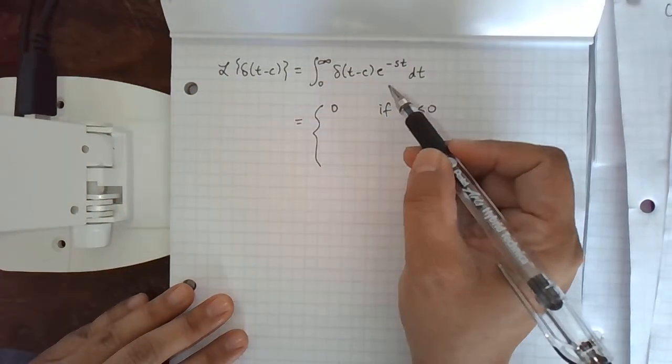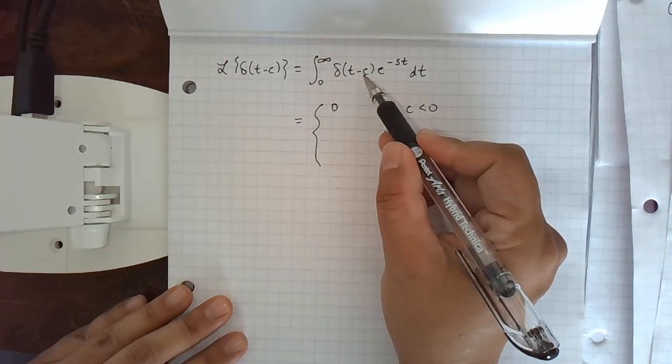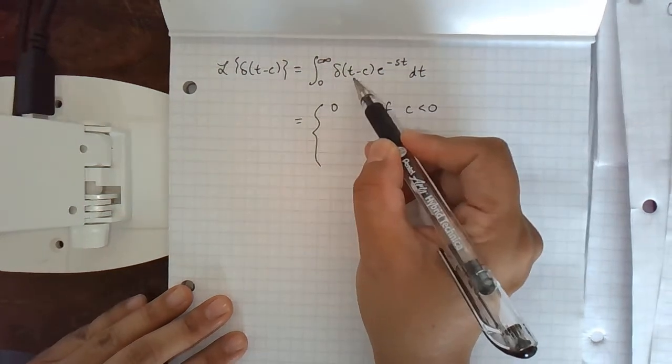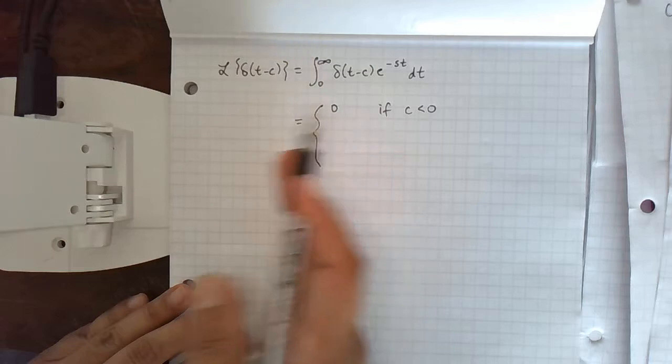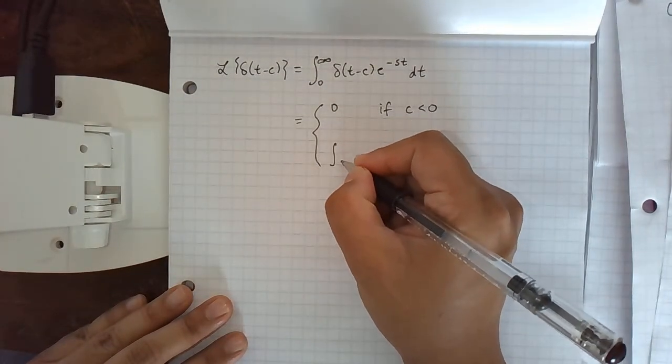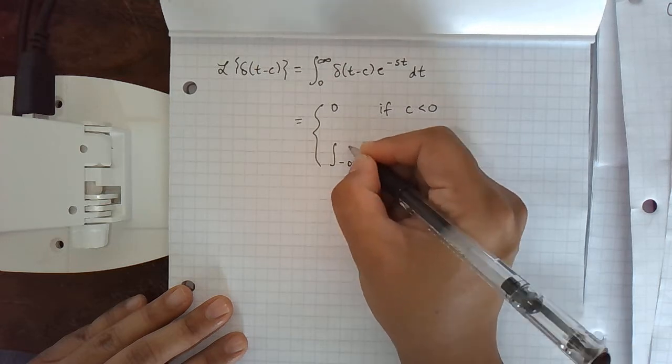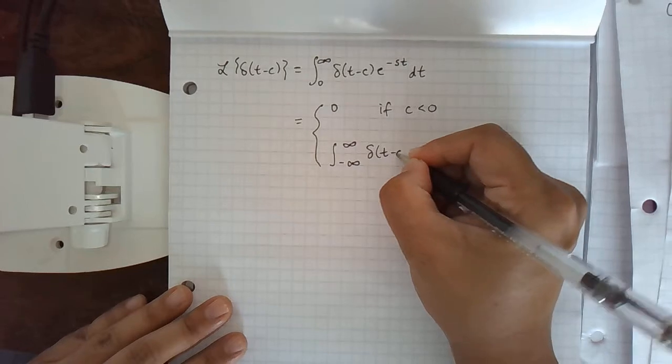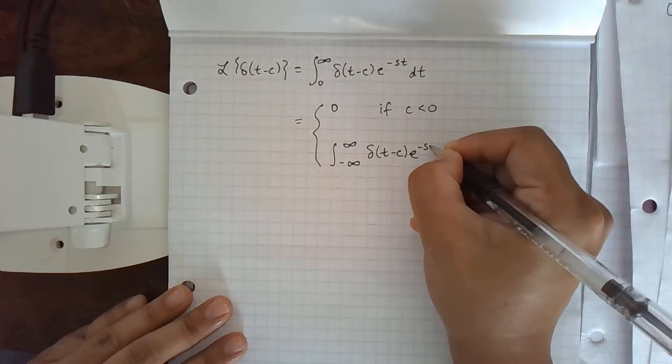If c is greater than zero, then this function is going to be zero for all negative numbers. So we can actually take the integral along the whole number line of the Dirac delta function times e to the negative st dt.